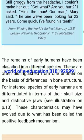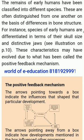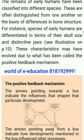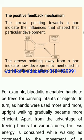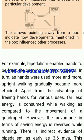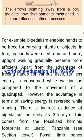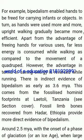Remains of early humans have been classified into different species, often distinguished from one another on the basis of differences in bone structure — for instance, species of early humans are differentiated in terms of their skull size and distinctive jaws. These characteristics may have evolved due to what has been called the positive feedback mechanism. The arrows in the diagram pointing towards a box indicate the influences that shaped a particular development, while arrows pointing away indicate how that development influenced other processes. For example, bipedalism enabled hands to be freed for carrying infants or objects. In turn, as hands were used more and more, upright walking gradually became more efficient. There is indirect evidence of bipedalism as early as 3.6 million years ago, from the fossilized hominid footprints at Laetoli, Tanzania.